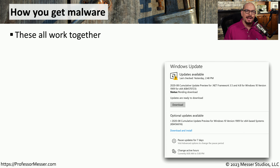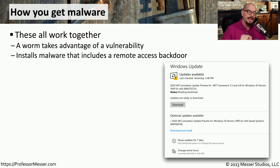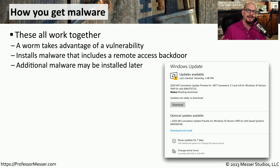We often think of malware as one event or one thing that occurs. But in reality, all of these different types of malware work together to infect your system. For example, you might have a worm that takes advantage of a known vulnerability on your system and automatically installs itself on your storage drive. It might then install additional malware that might have a remote access backdoor, and when the attacker connects to that remote access, they can install additional malware to provide additional capabilities.